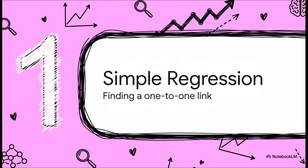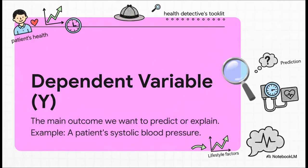Think of simple regression as looking for a really clear one-to-one connection — we're just trying to see how one single factor might influence one single health outcome. In any investigation, you've got the mystery you're trying to solve. In regression, we call that the dependent variable, or Y. It's the main thing, the outcome we want to predict. A perfect example is a patient's systolic blood pressure — that's the effect we're trying to figure out.